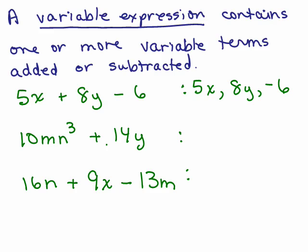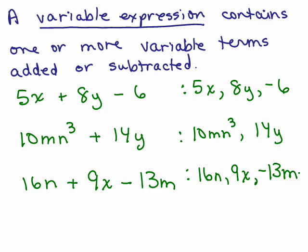The second one here has only two terms: 10mn³ is one term and 14y is the other term. And the third one has three terms as well: 16m, 9x, and negative 13m. So a variable expression does not have any equal sign. It's just an expression made up of variable terms, at least one variable term being added or subtracted to some other term.